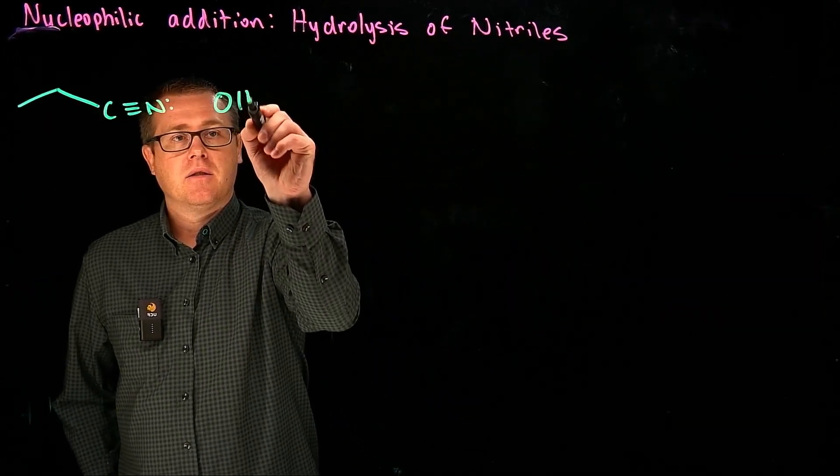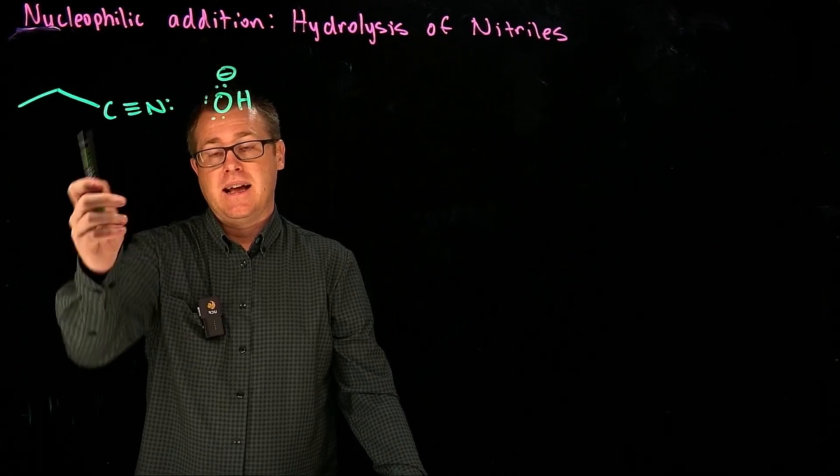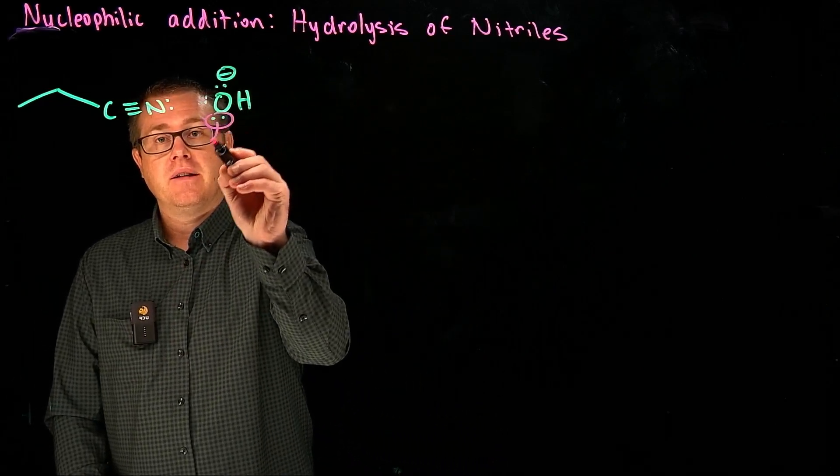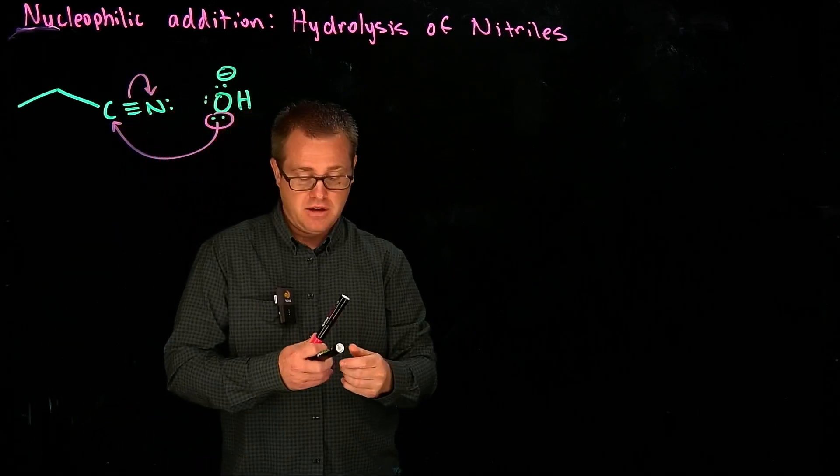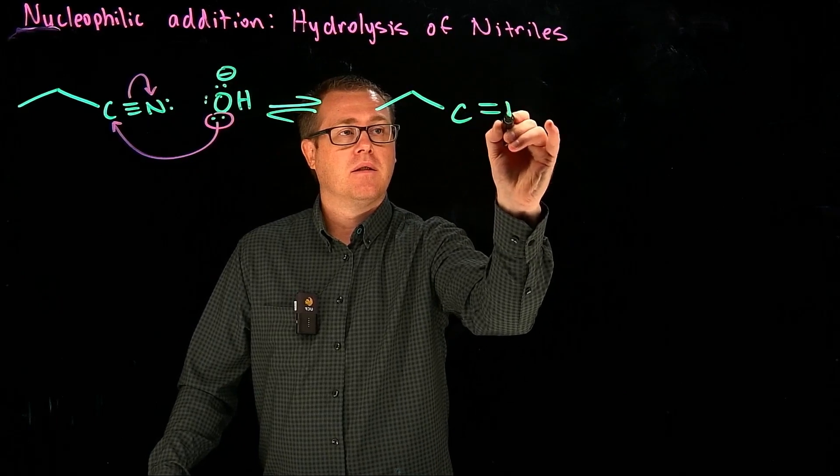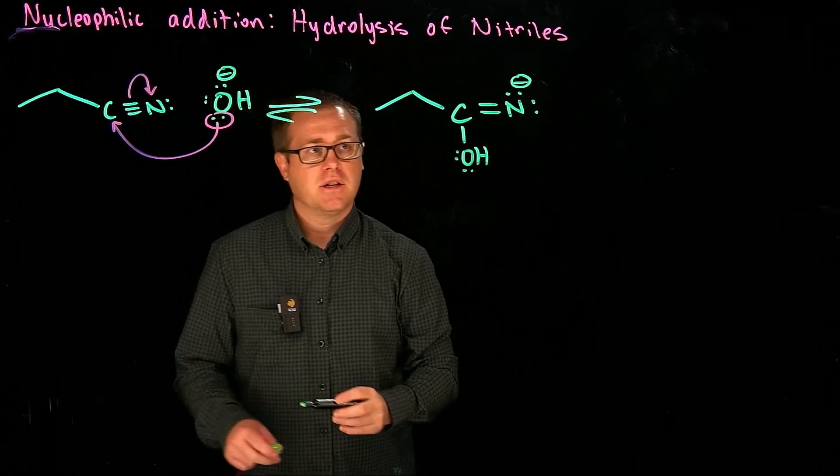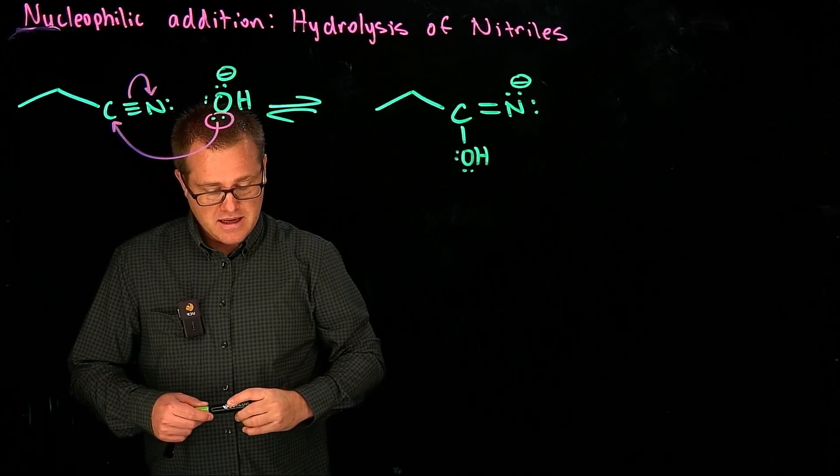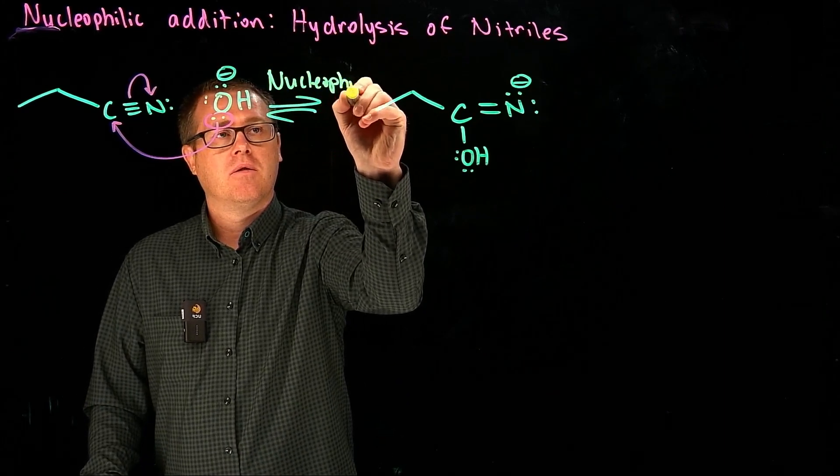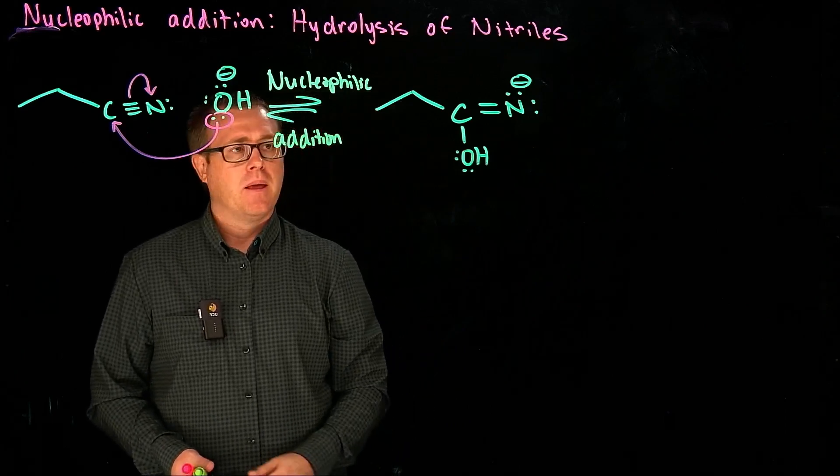So under basic conditions, we have our hydroxide here. And the carbon of a nitrile is analogous to a carbonyl carbon. It's electron-poor. So we can take our nucleophile here and attack that electrophilic carbon. And so that would generate this species, and then we go OH, and that would have to be a negative charge now. And that step right there is what? That's a nucleophilic addition. There's our nucleophilic addition.